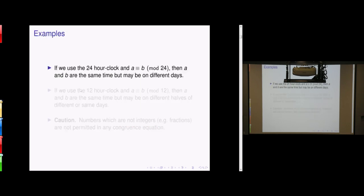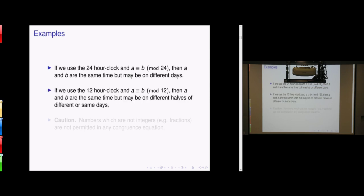For example, because we are talking about periodic movements — like every day is periodic — if you use a 24-hour clock, two numbers like 1 and 25 are congruent modulo 24. If you have these two numbers, a and b are the same time but maybe on different days. If you use a 12-hour clock, then 1 and 13 are congruent modulo 12. In that case, a and b are the same time but maybe on different halves of the day.